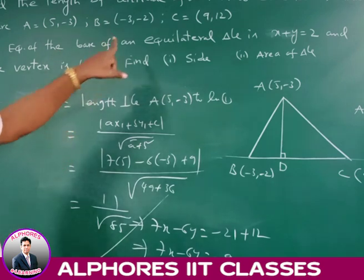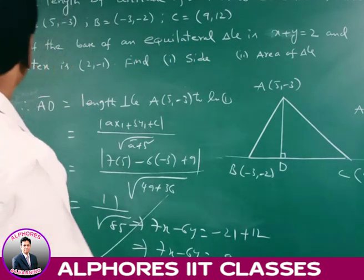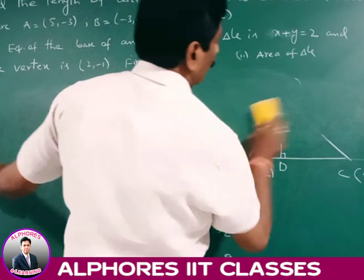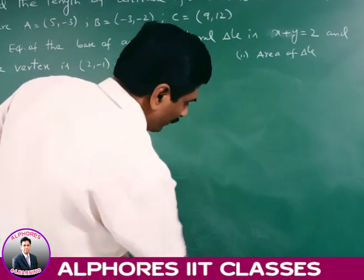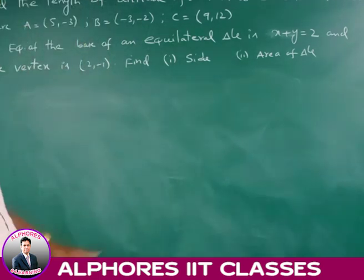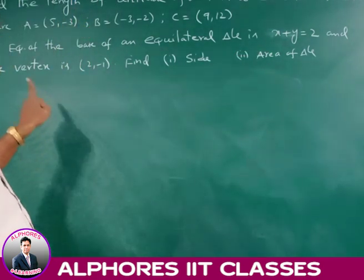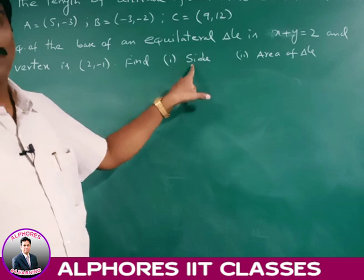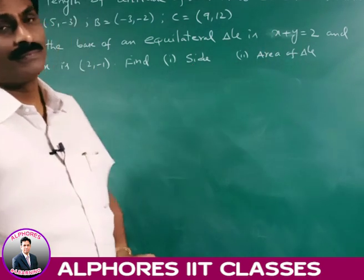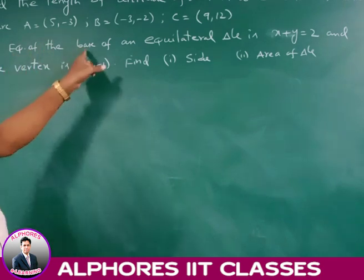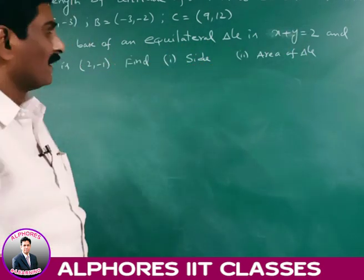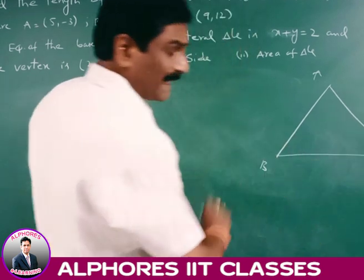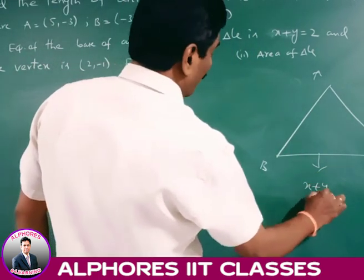Next problem: the equation of the base of an equilateral triangle is x + y = 2, and the vertex is (2, -1). Find the length of the side and area of the triangle. In this case, the equation of the base of the equilateral triangle is x + y - 2 = 0.